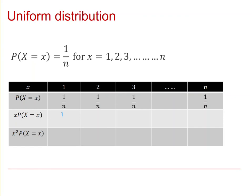So one times one over n is simply one over n. Two times one over n is two over n. Three times one over n is three over n, and so on all the way up to n times one over n, which is n over n.